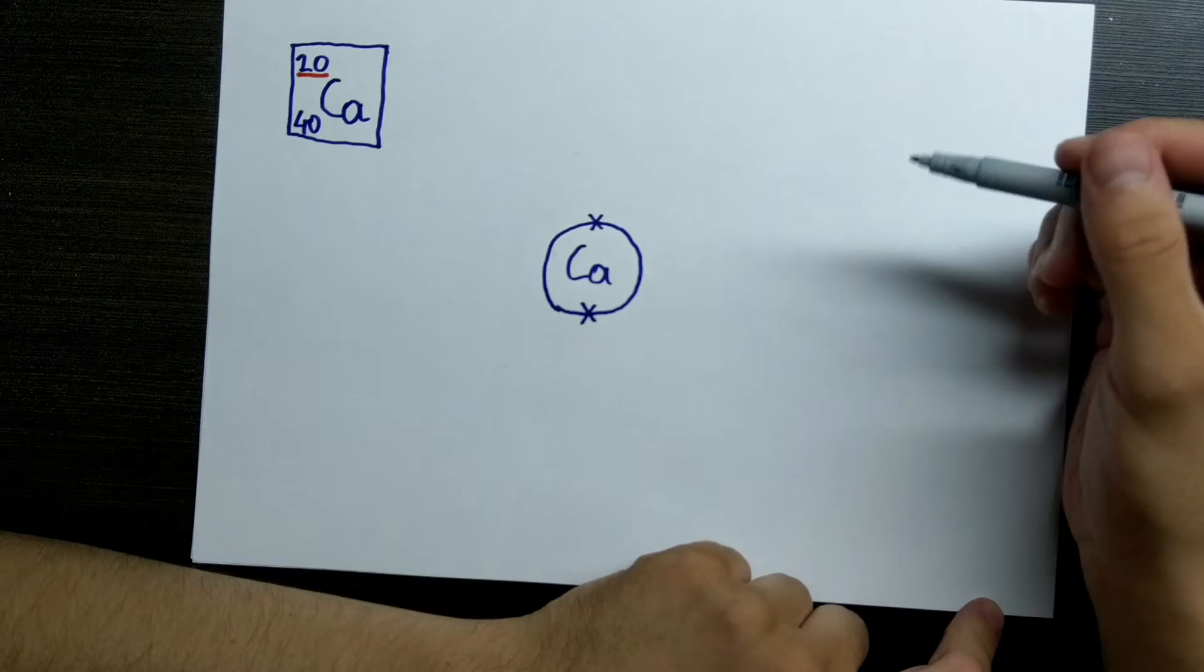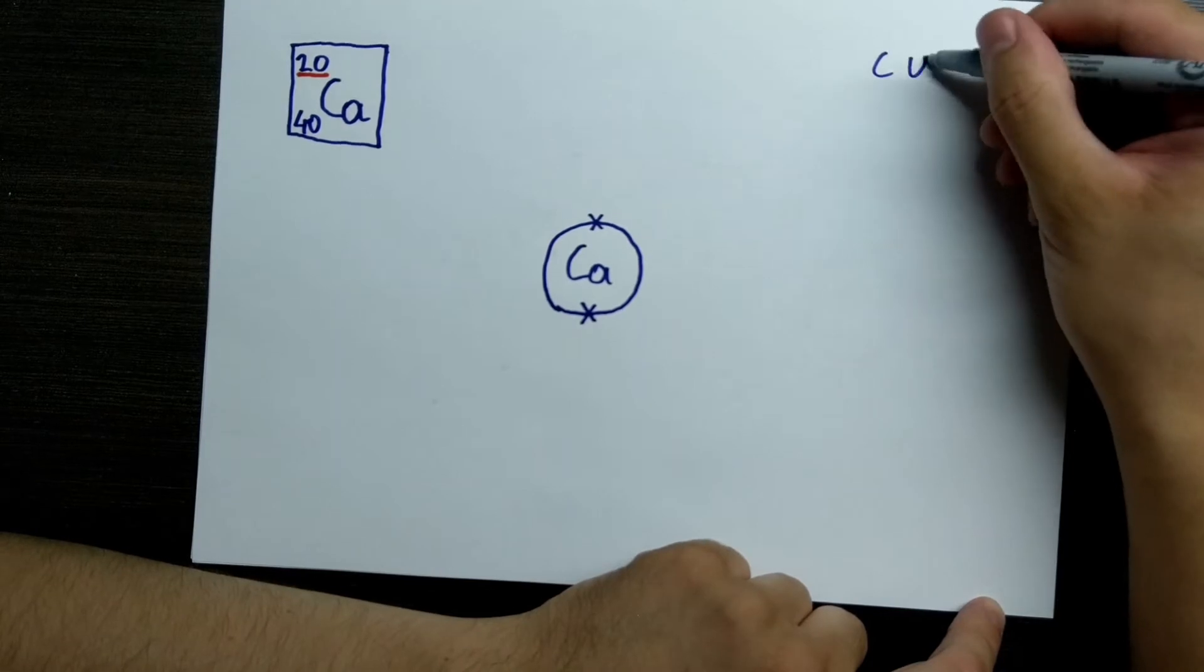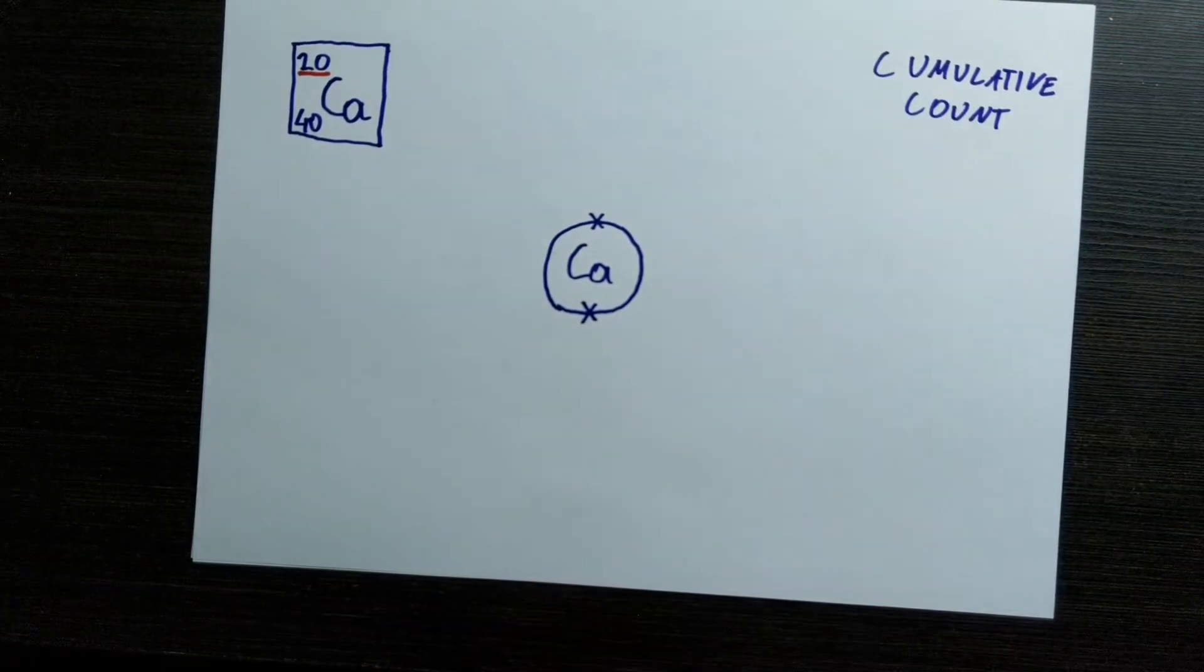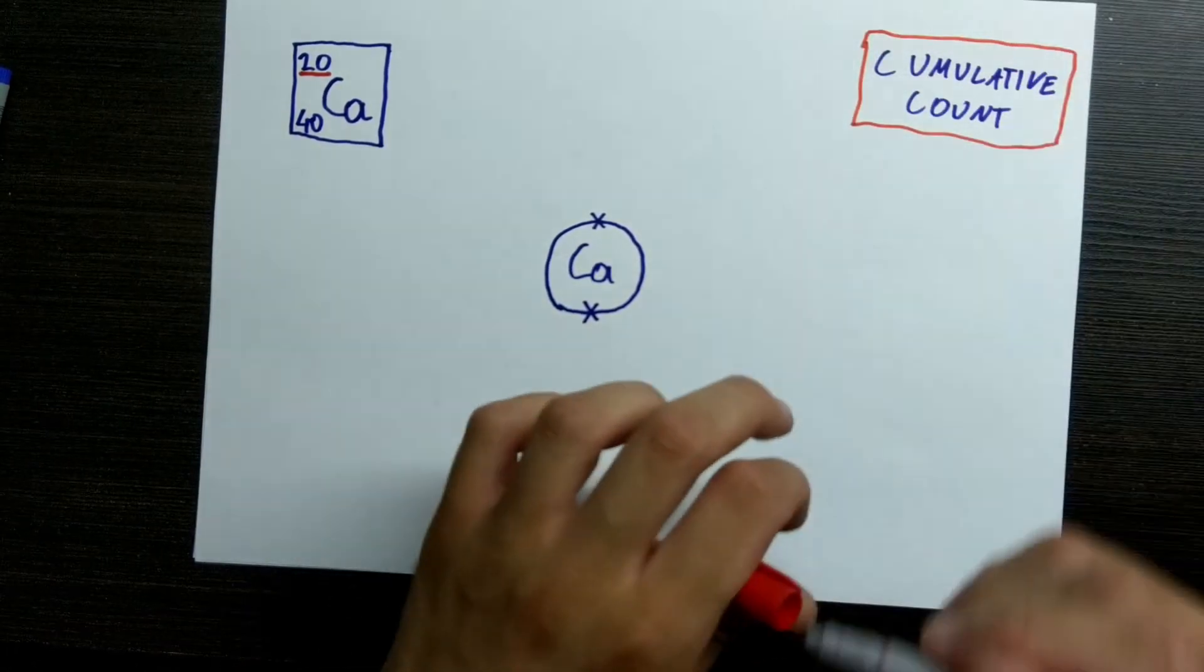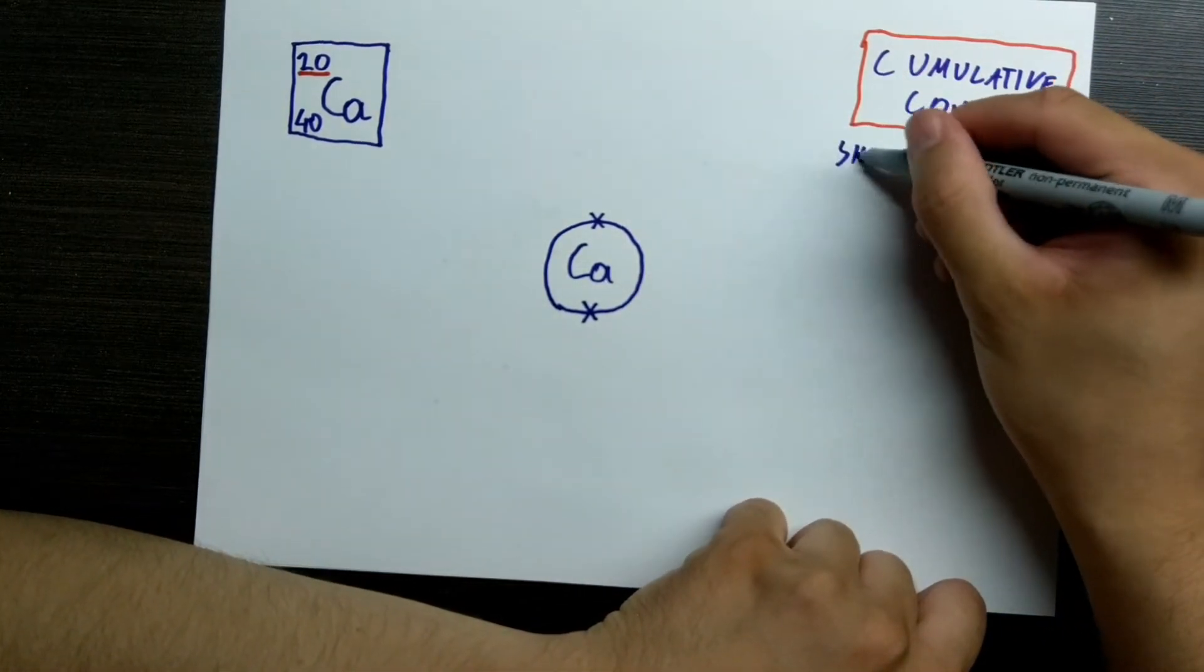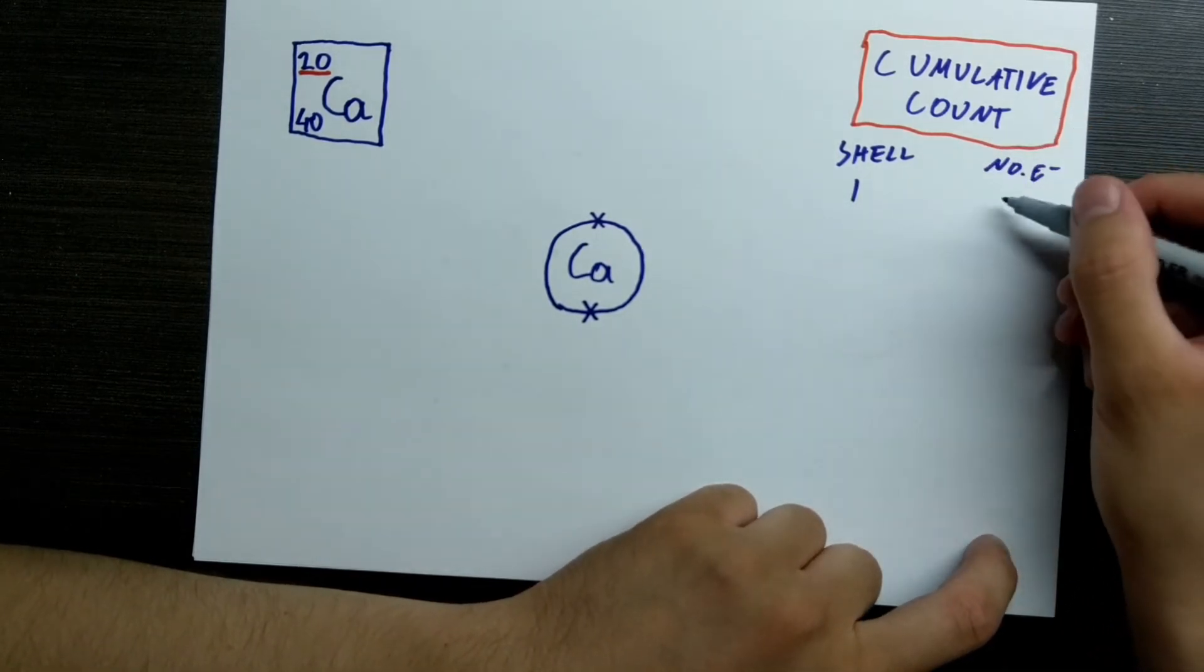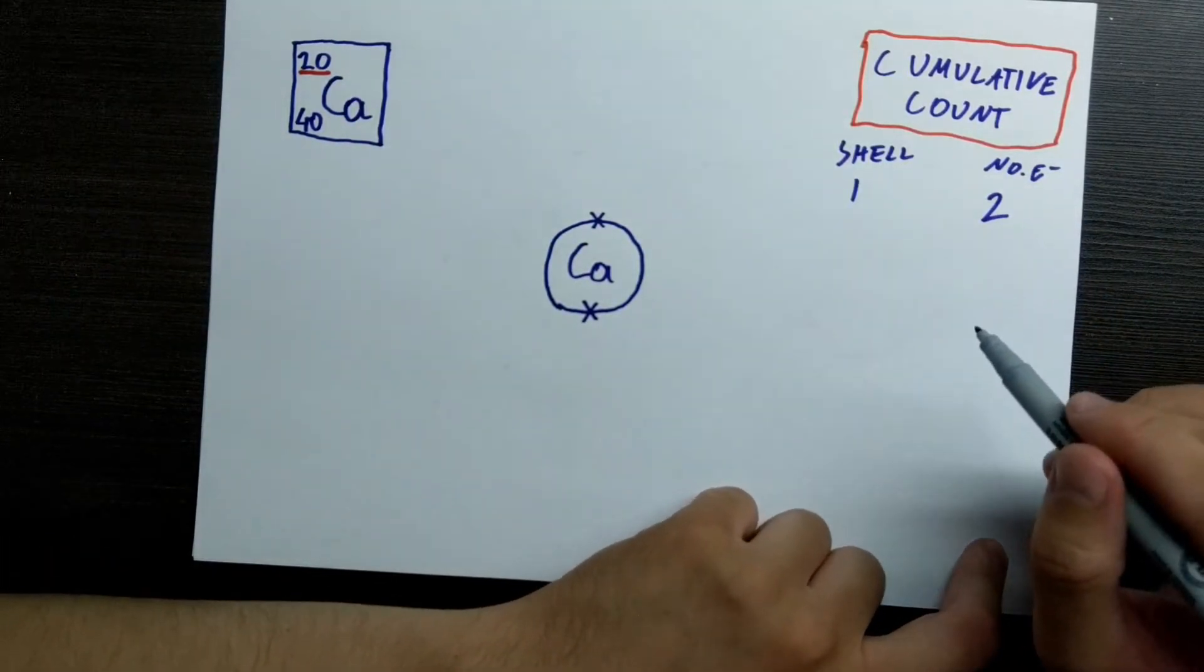Now, let's draw the rest. Let's put down here, cumulative count. Because we need to keep count of these. Cumulative count, right here. After filling first shell, here we will have shell and here we will have number of electrons. After filling the first shell, we allocated two out of twenty total electrons that we need to allocate.